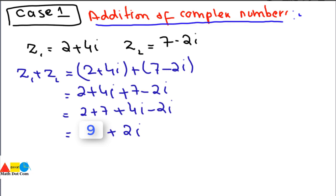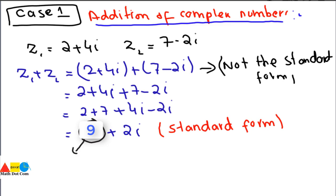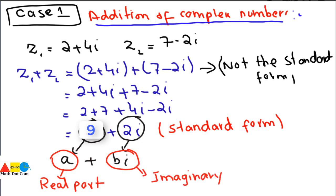The form at the beginning was not in standard form, but after applying addition we have converted it into standard form A plus B iota, where 9 is the real part and 2 iota is the imaginary part. This was Case 1, adding two complex numbers and converting to standard form. Now we move towards Case 2 — subtraction of two complex numbers.